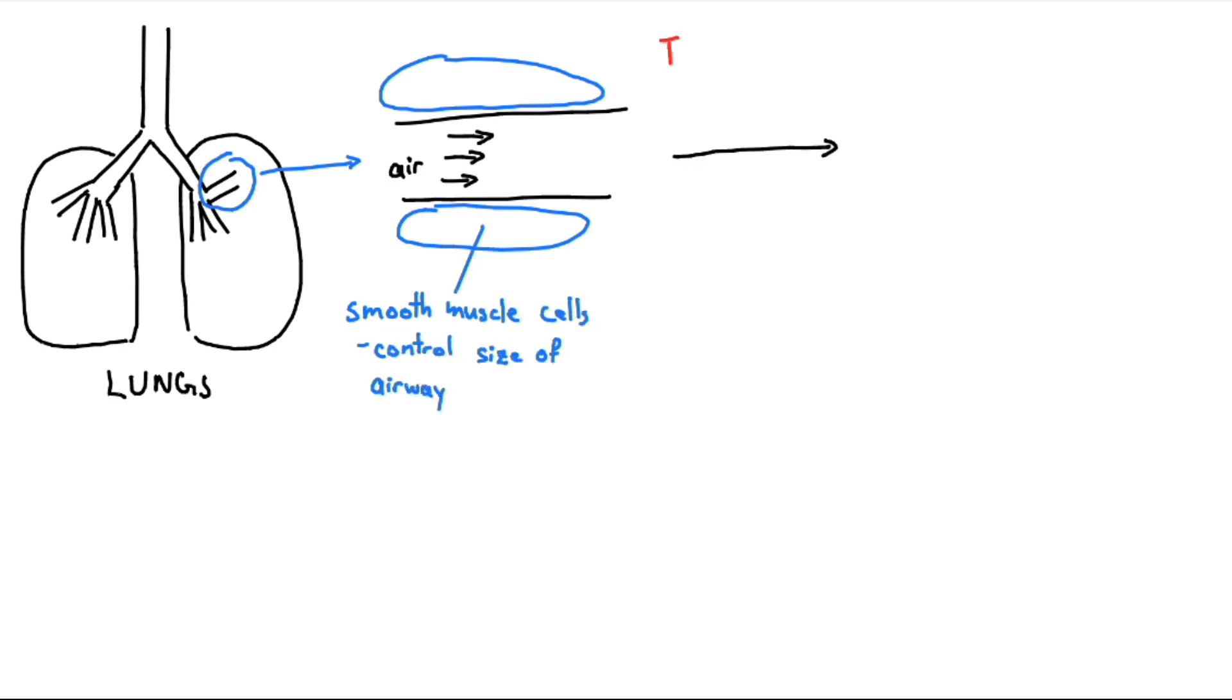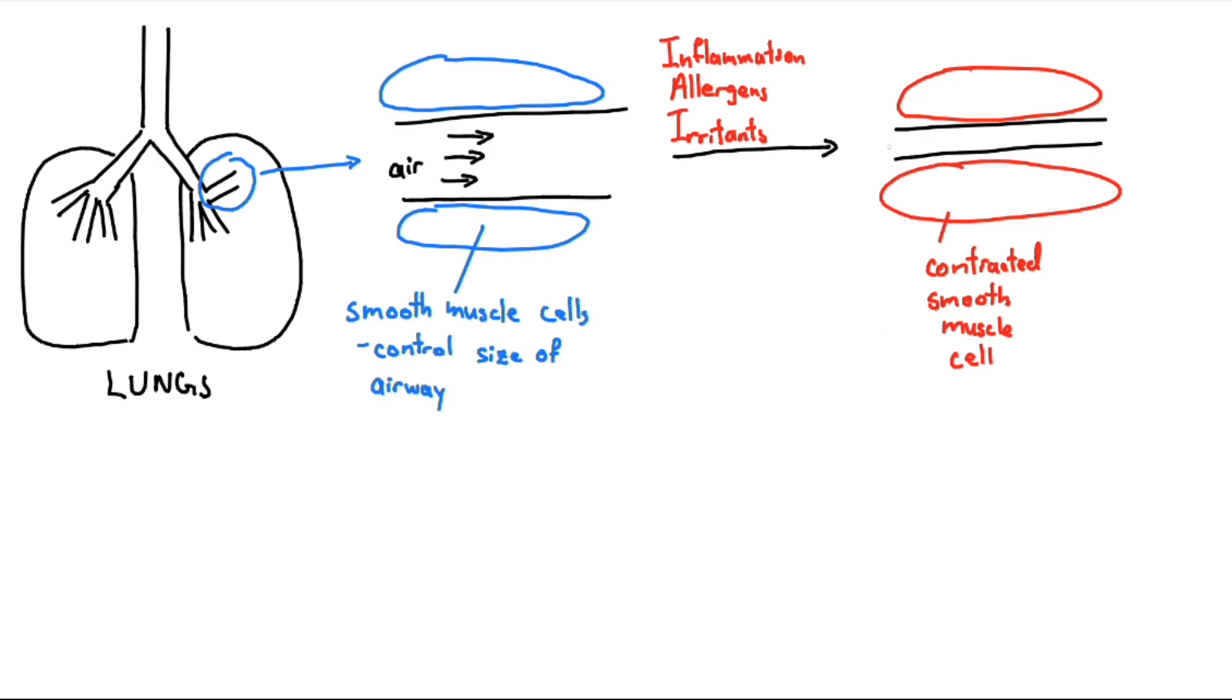Inflammation, allergens, or irritants may cause the smooth muscle cells to contract, and this causes our airways to become more narrow, manifesting in asthma flare-ups and difficulty breathing.